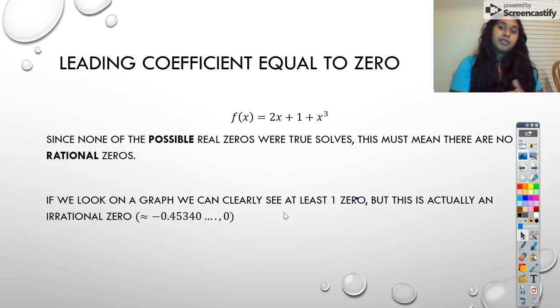If you look at the graph, you might think the cubic function clearly hits the x-axis. But the reality is, it does hit the x-axis, but it is an irrational zero. I put that coordinate point right here to prove that. At the zero, your x value is approximately negative 0.45340 and it keeps going, which makes it an irrational zero, which is why we technically couldn't solve for it.